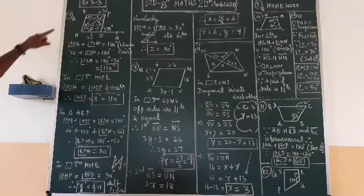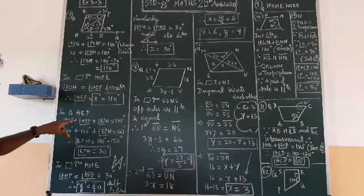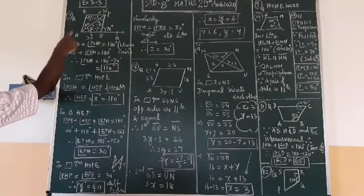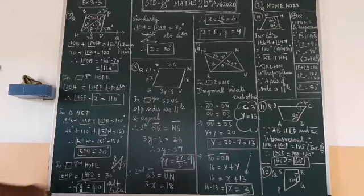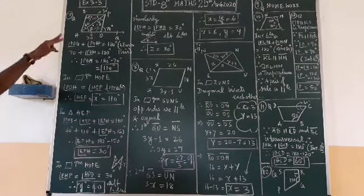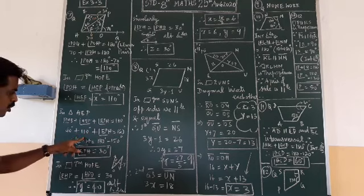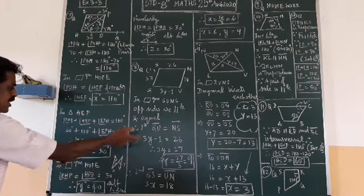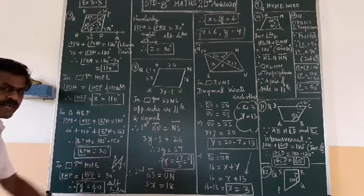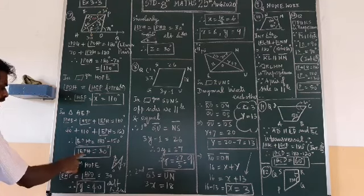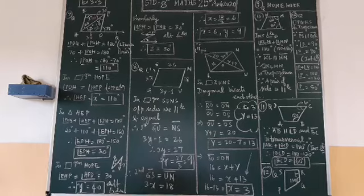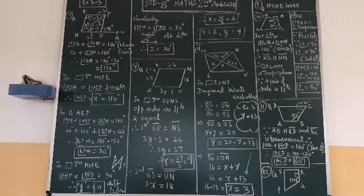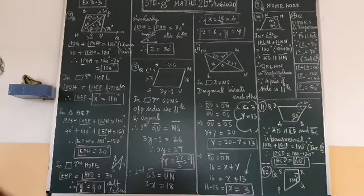Once again you go for the triangle HEP. In triangle HEP, angle EHP plus HEP plus EPH will be equal to 180 degree because it is a triangle. Two angles we know, 40 and 110 we know. What will be the other angle? So 180 minus 150, you will get EPH value equal to 30 degree.